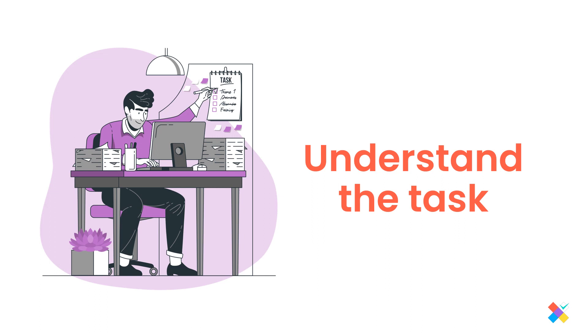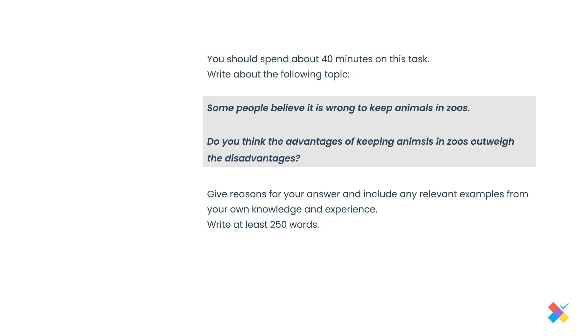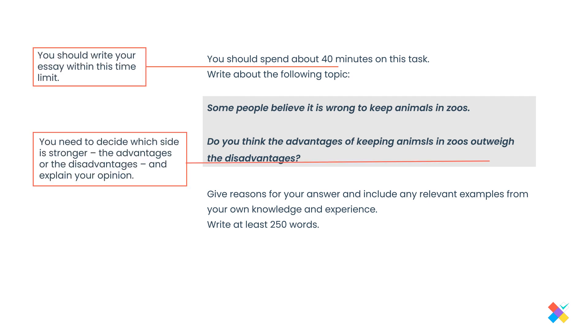We're going to start with the first thing by understanding the task. This is basically what you're going to see during your exam. Again, you should stick to the time limit. Spend 40 minutes writing this one. I'm going to give you a breakdown. Spend six to maximum seven minutes planning, understanding the task, underlining or circling keywords, brainstorming ideas, 30 minutes actually writing the essay, and then three to four minutes reading, proofreading your essay, checking for grammar or spelling mistakes, and then you're done.